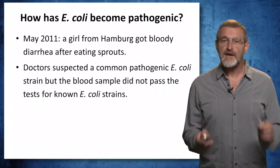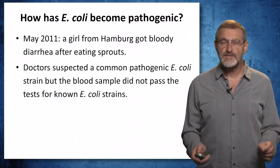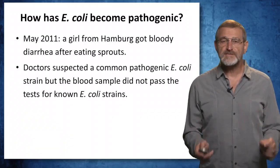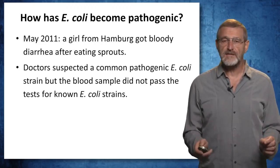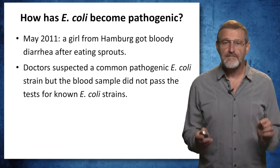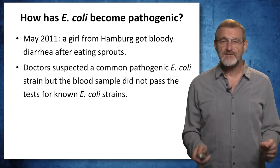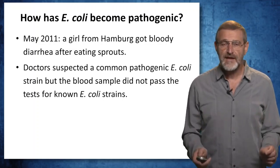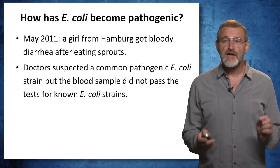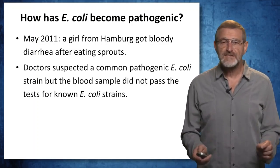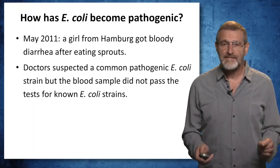In May 2011, a girl from Hamburg developed bloody diarrhea after eating sprouts, and doctors suspected it was a common pathogenic E. coli strain. But the blood sample from this girl did not pass the test for known E. coli strains. At this point, it became clear that a new pathogen had emerged, and the goal was to sequence the genome of this pathogen and figure out how it had become pathogenic.